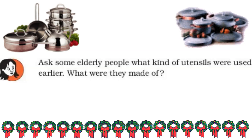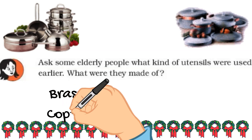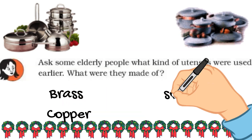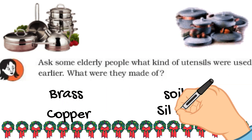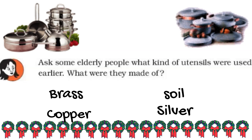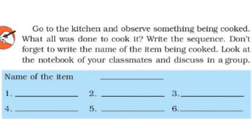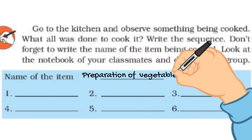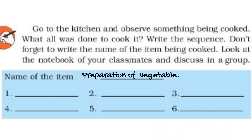Ask some elders what type of utensils were used earlier and what they were made of. Those were made of brass, copper, soil, and sometimes silver also — some utensils are made of silver. Go to the kitchen and observe which food items are being cooked, and write the steps in sequence.